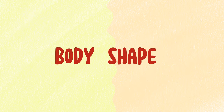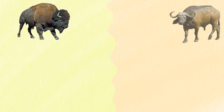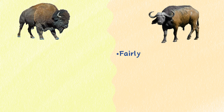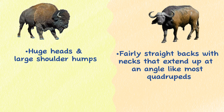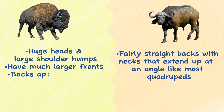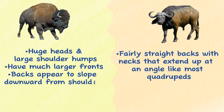Body shape. Buffalo have fairly straight backs, with necks that extend up at an angle like most quadrupeds. Because of their huge heads and large shoulder humps, bison have much larger fronts, and their backs appear to slope downward from shoulder to rump.